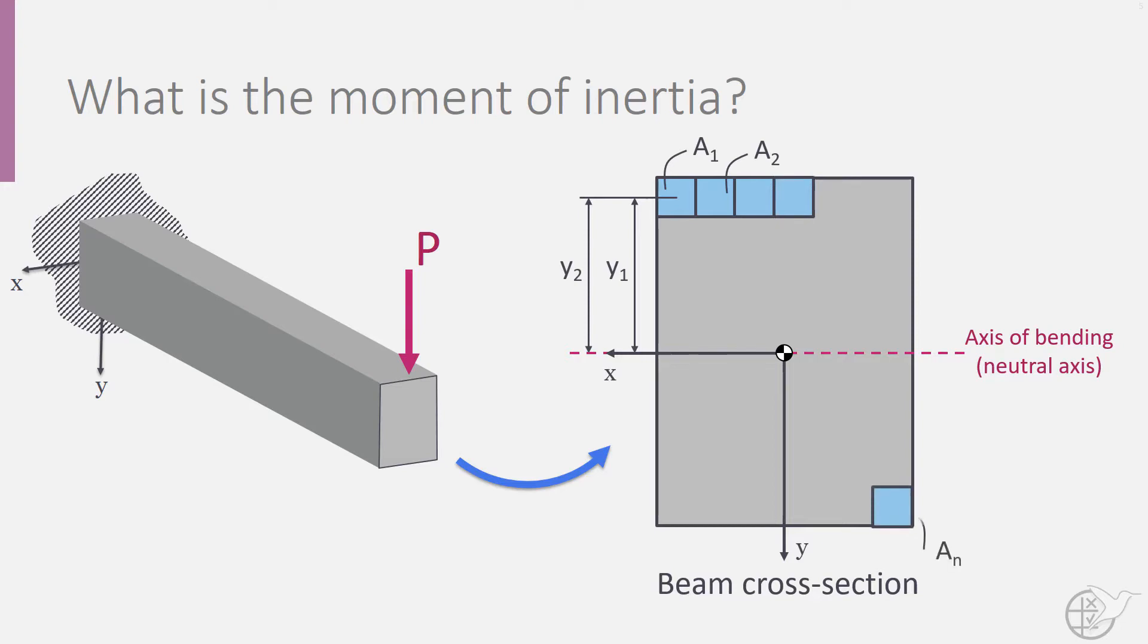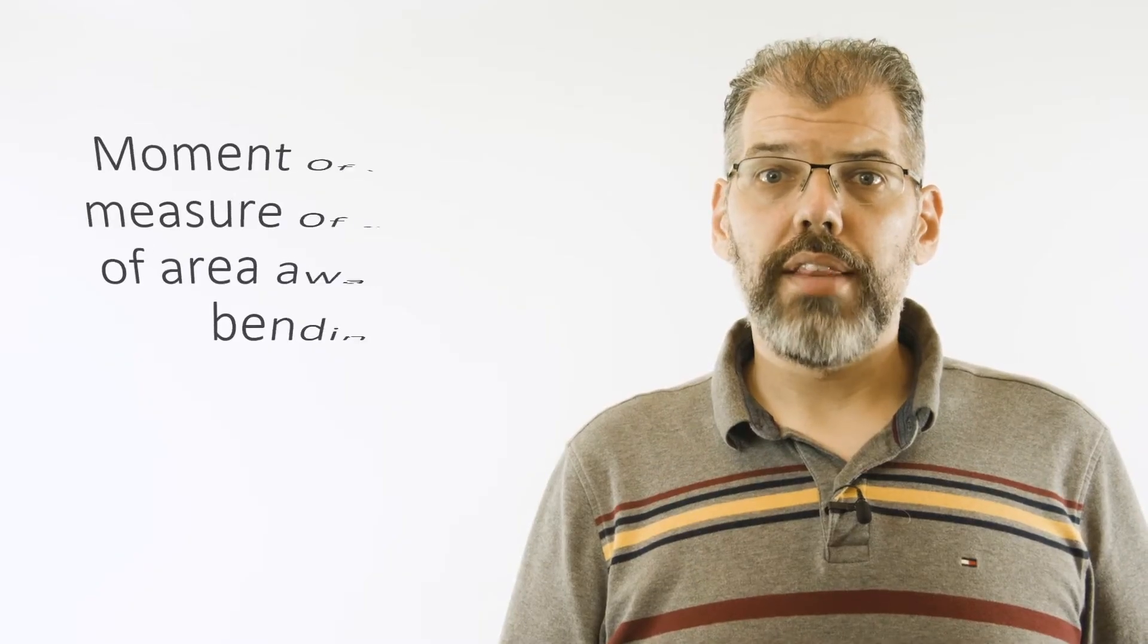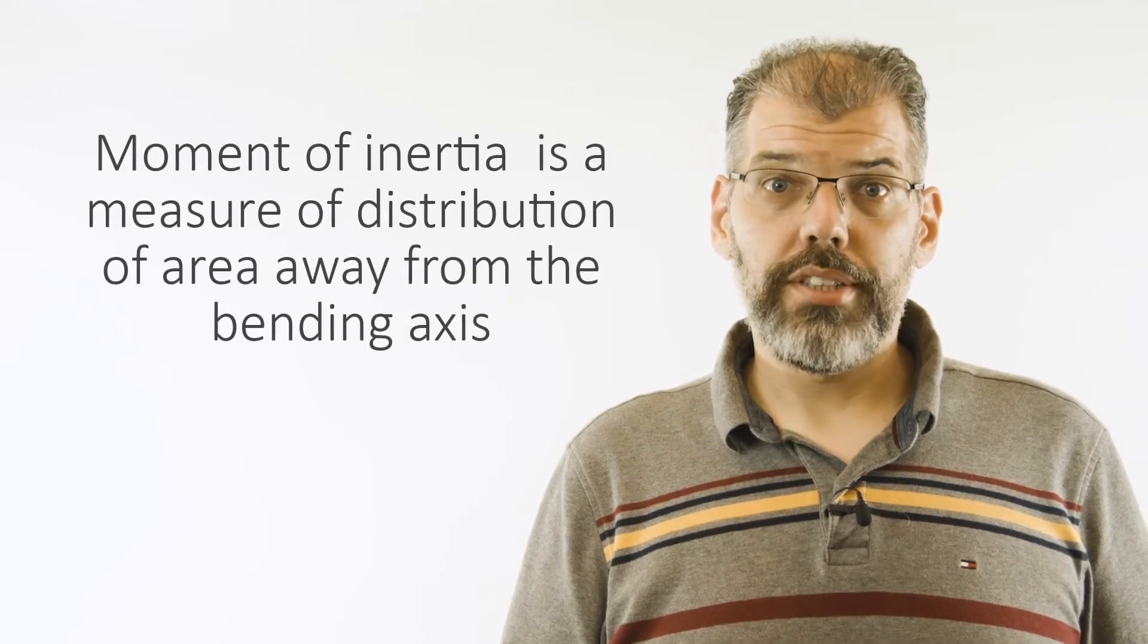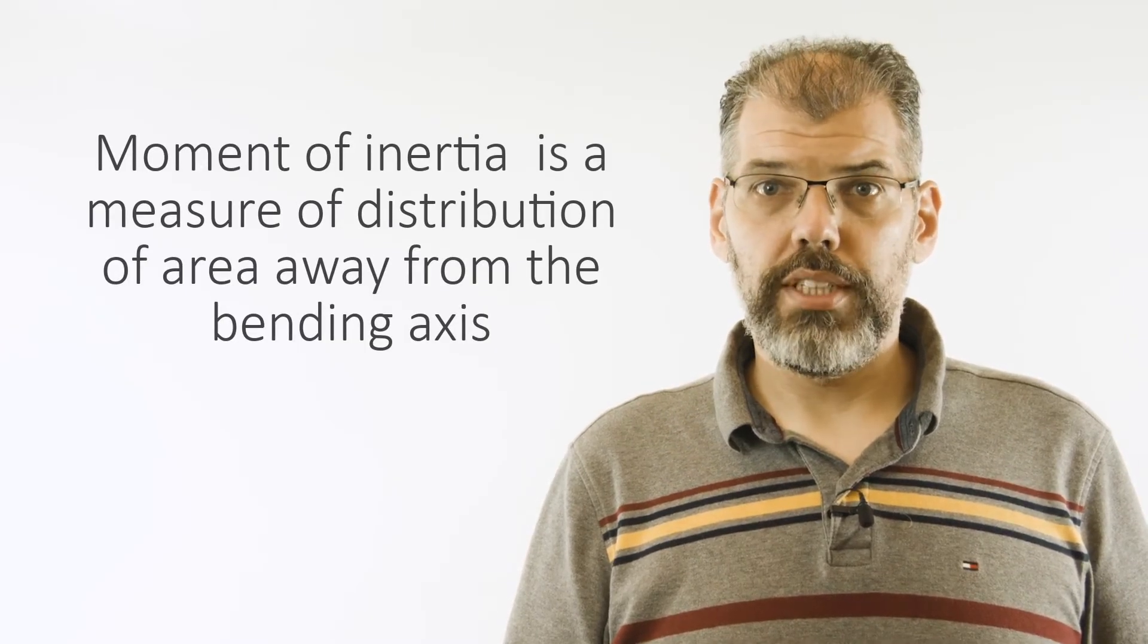It is calculated by dividing up a particular cross-sectional area into small elements, multiplying each of these areas by the distance from the element to the neutral axis, and summing all of these results. It is important to understand this concept behind the moment of inertia, but the exact formulas for different cross-sections can always be referenced from a design handbook.